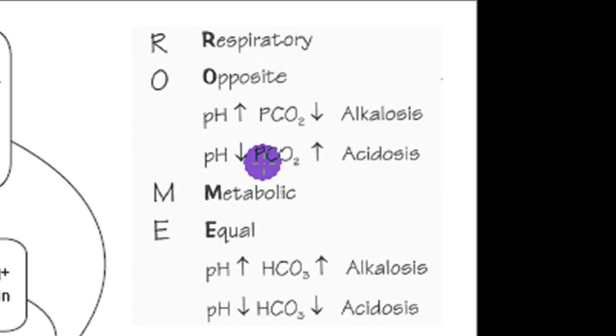In the case of metabolic alkalosis and acidosis, obviously alkalosis is an increase in pH. That's usually accompanied by an increase in bicarbonate. Or if we have a decrease in pH causing acidosis, then we would have a decrease in bicarbonate.